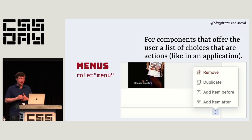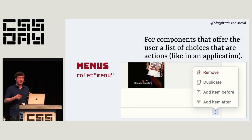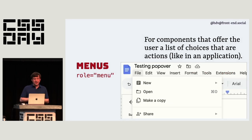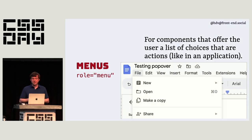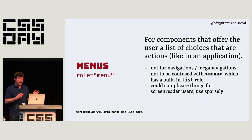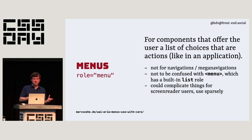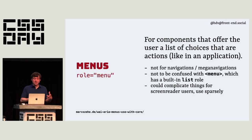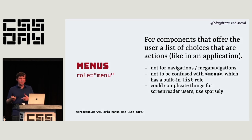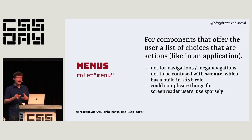The third option is menu. That's for components that offer a list of actions — not links, but things the user can do like remove or duplicate something. An example is the menu in Google Docs — the File menu for making a new document or saving. It's explicitly not for navigation, not for links. And it's not to be confused with the HTML menu element, which confusingly has a list role and little to do with the menu role. Using menu can complicate things for screen reader users — use it only for a bunch of actions someone can take on the page.